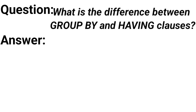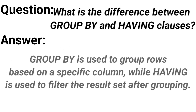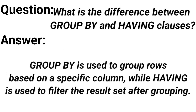What is the difference between GROUP BY and HAVING? GROUP BY is used to group rows based on a specified column, while HAVING is used to filter the result set after grouping.